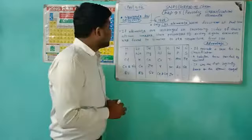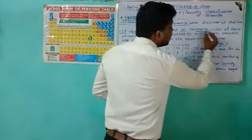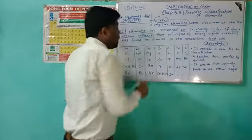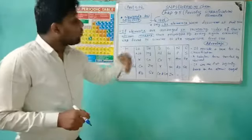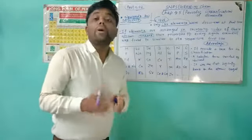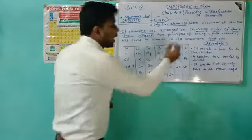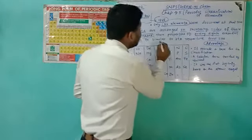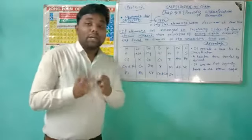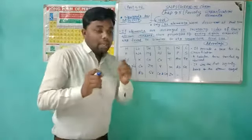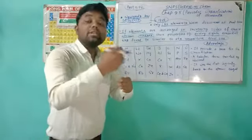Coming to the law: according to Newlands' Law of Octaves, if elements are arranged in increasing order of their atomic masses, the property of every eighth element was found to be similar to its respective first element. This means if we count from one, every eighth element starting from the first has properties similar to that first element.